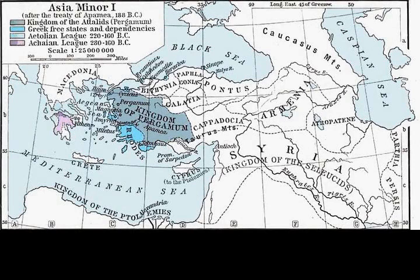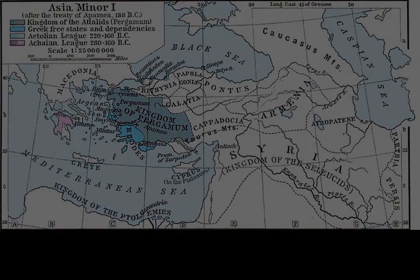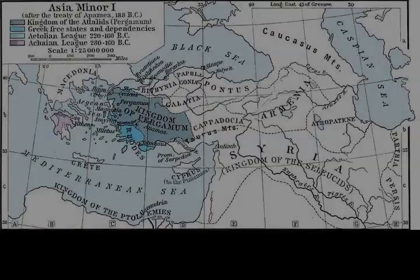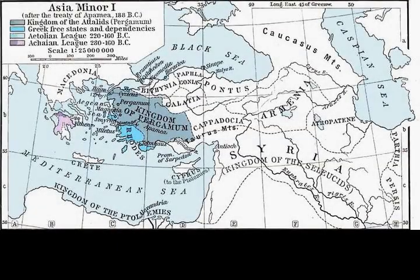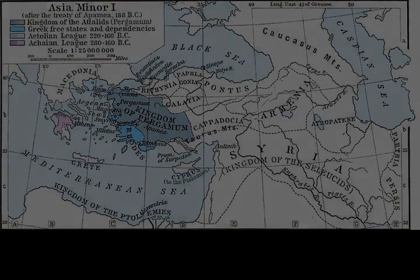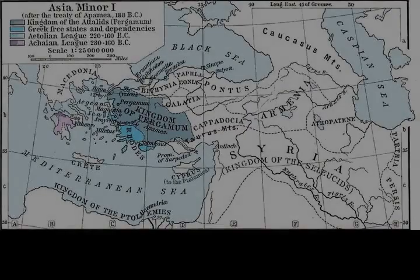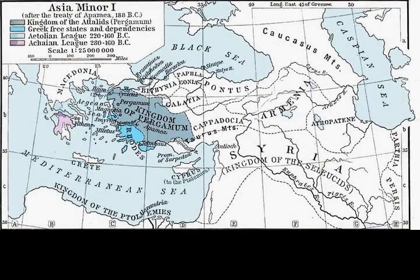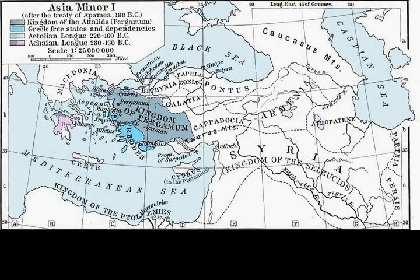The Seleucids lost twenty-nine ships sunk and thirteen ships captured, while the Roman-Rhodian force suffered two ships sunk and one ship captured. Polyxinidas took what remained of the Seleucid navy — forty-seven ships in total — to Ephesus. The Romans' navy cruised outside the city in a show of force before departing to Chios for repairs. The battle solidified Roman control of the Mediterranean Sea for the next six centuries.